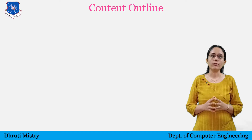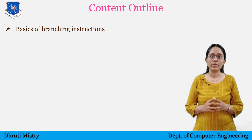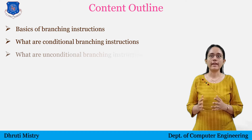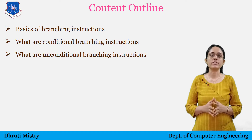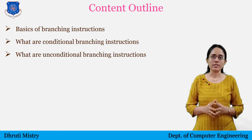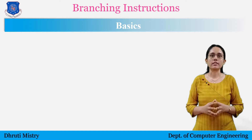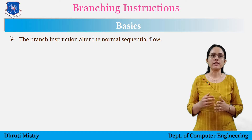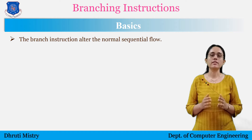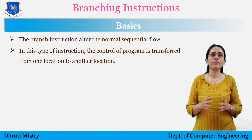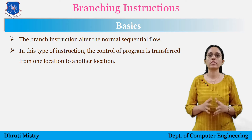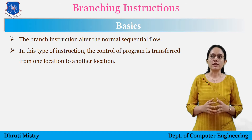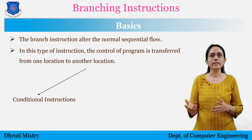In this session, we will cover the following topics: basics of branching instructions, what are conditional and unconditional branching instructions, and jump, call and return instructions. The branching instructions alter the normal sequential flow. In this type of instruction, the control of the program is transferred from one location to another location. These instructions alter conditionally and unconditionally.